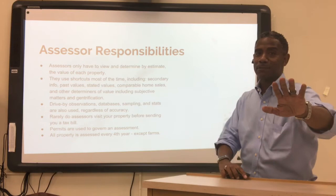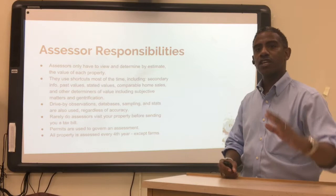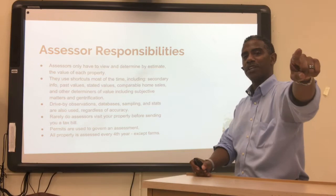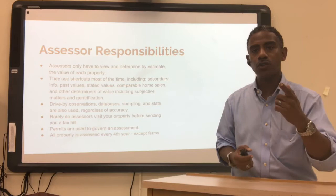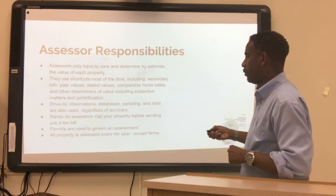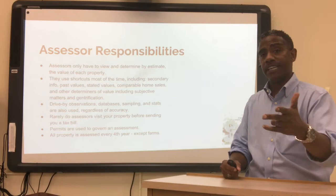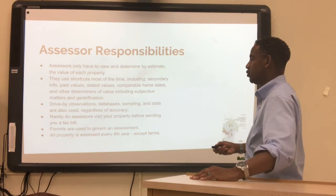Drive-by observations are used — you can drive by a piece of property and say it isn't worth much, or it's worth a lot. Databases, sampling, and stats are also used. Sometimes accuracy isn't even important. Rarely do assessors visit your property before sending you a tax bill — they probably haven't seen your property, or if they have, it was three to four years ago. Permits are used to govern assessment. If you add or subtract something from your home, you need to tell someone — otherwise you could be out of compliance or miss out on an assessment, requiring an appeal.